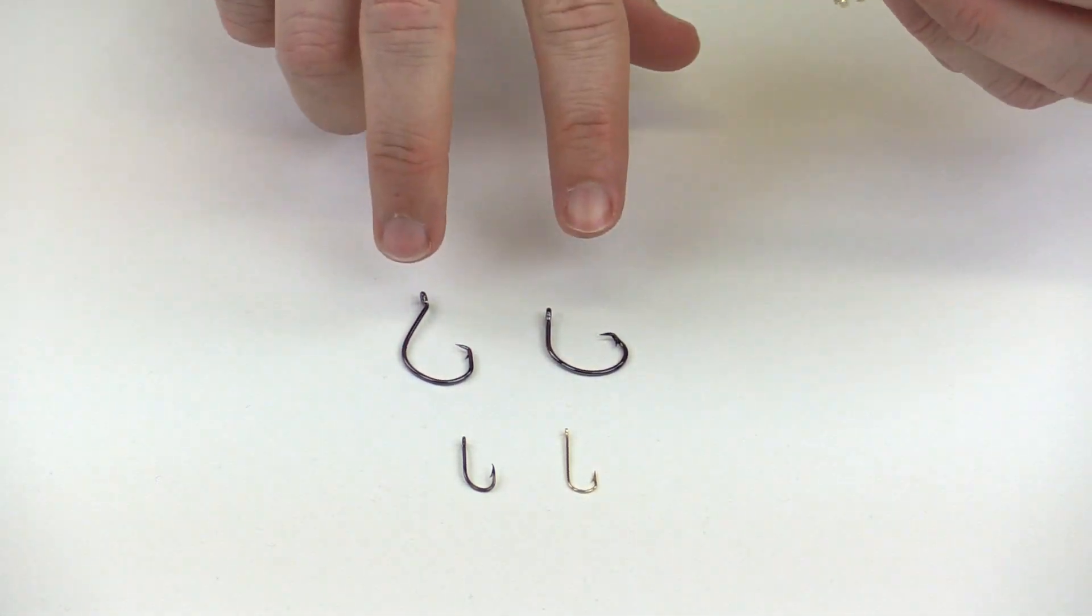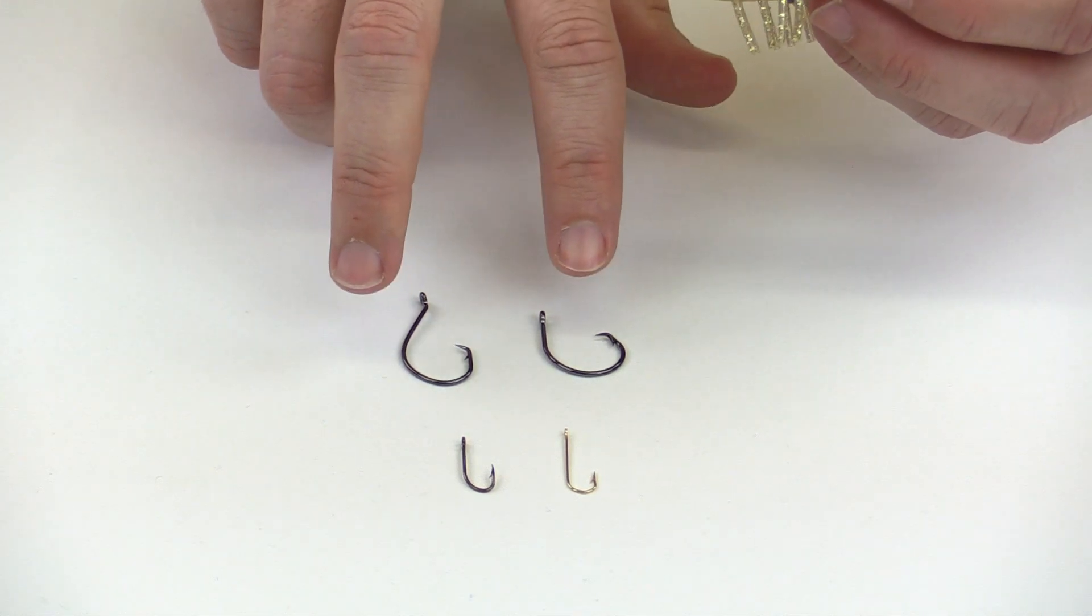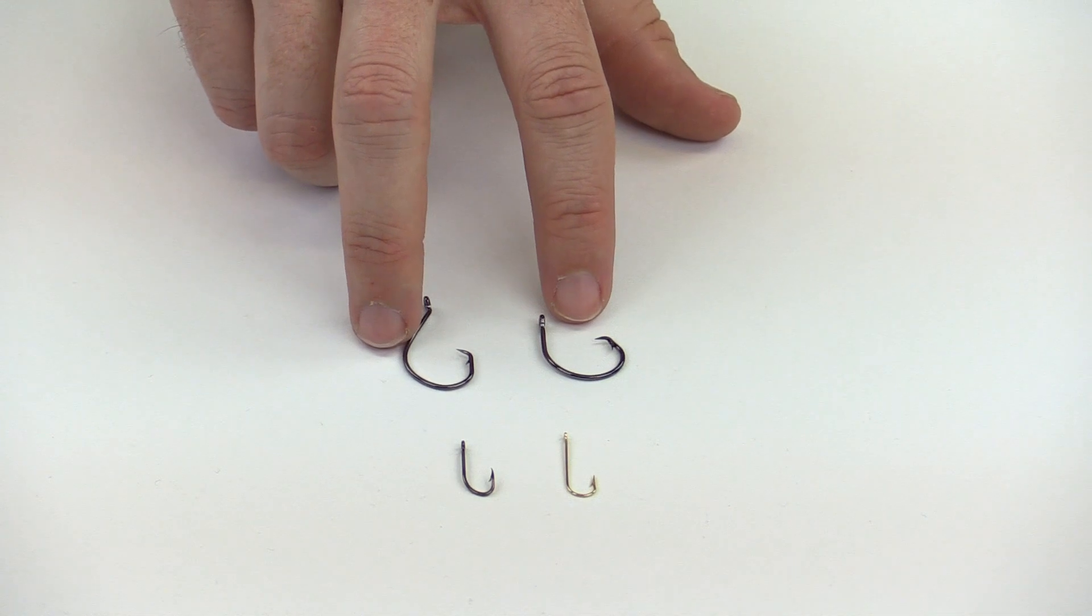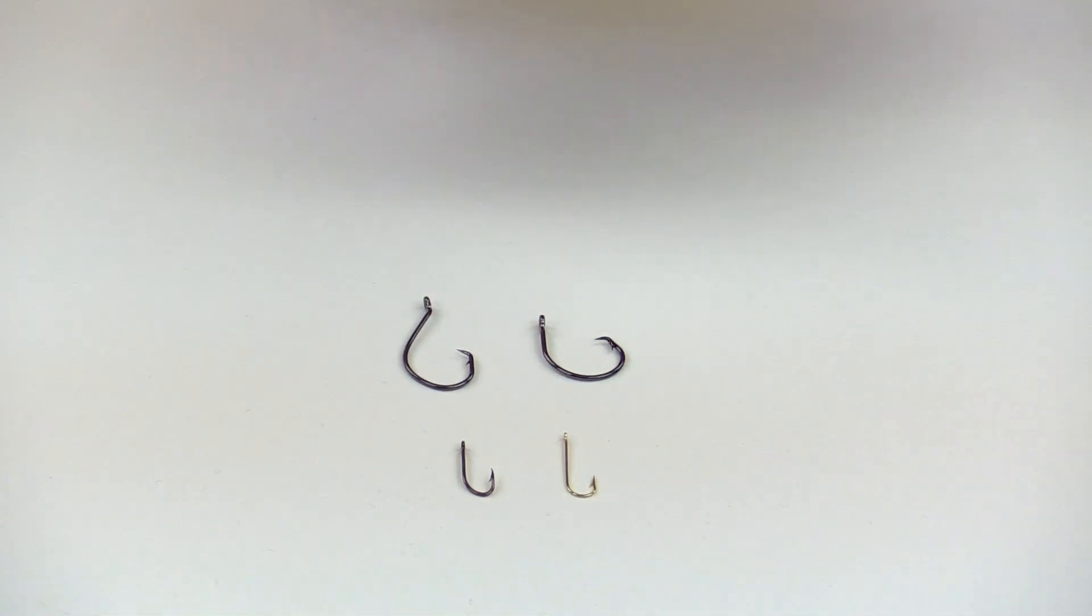So again, just recommend circle hooks for the bigger baits. They're just safer, they're better in the environment. They're less likely to hook whoever is using them, which is a plus.